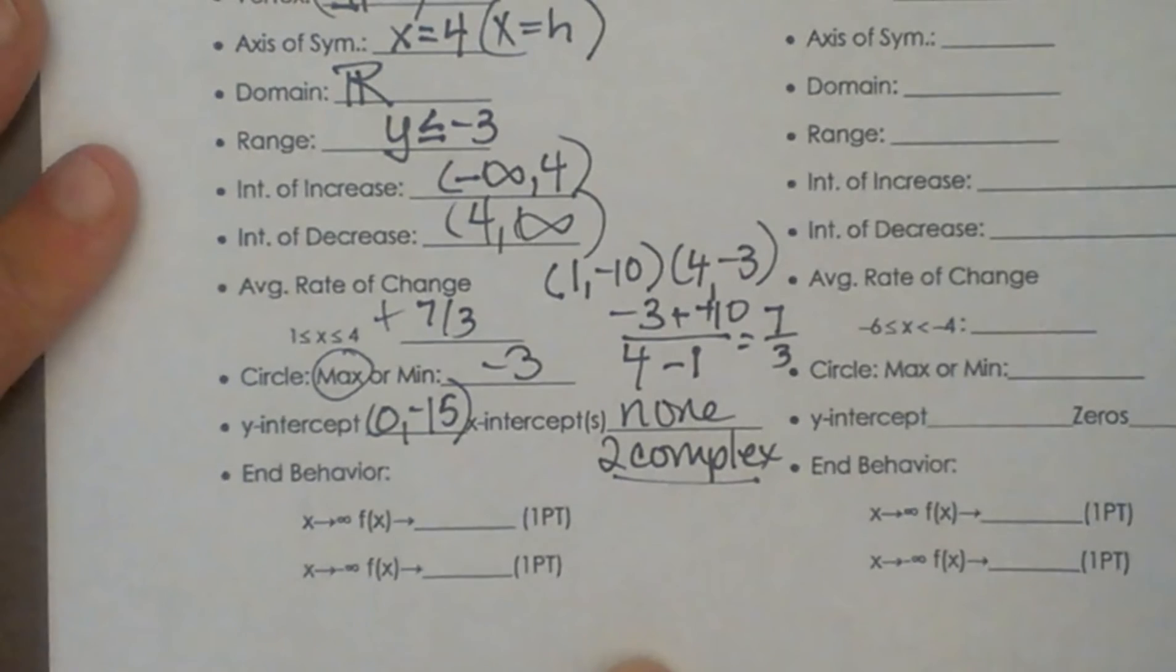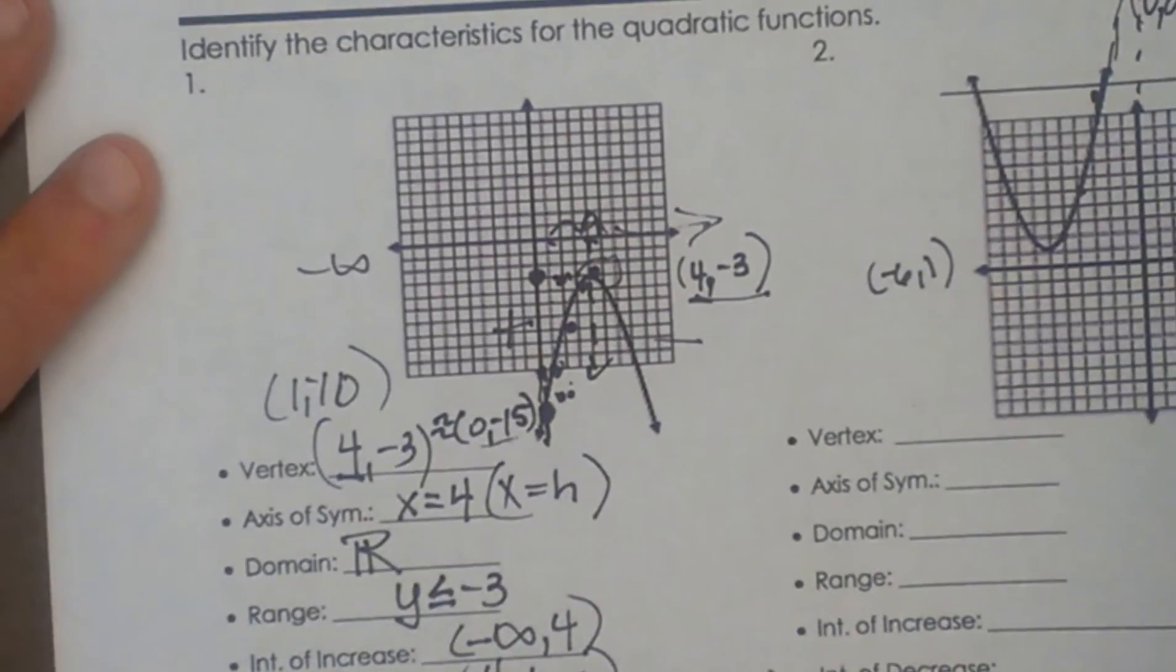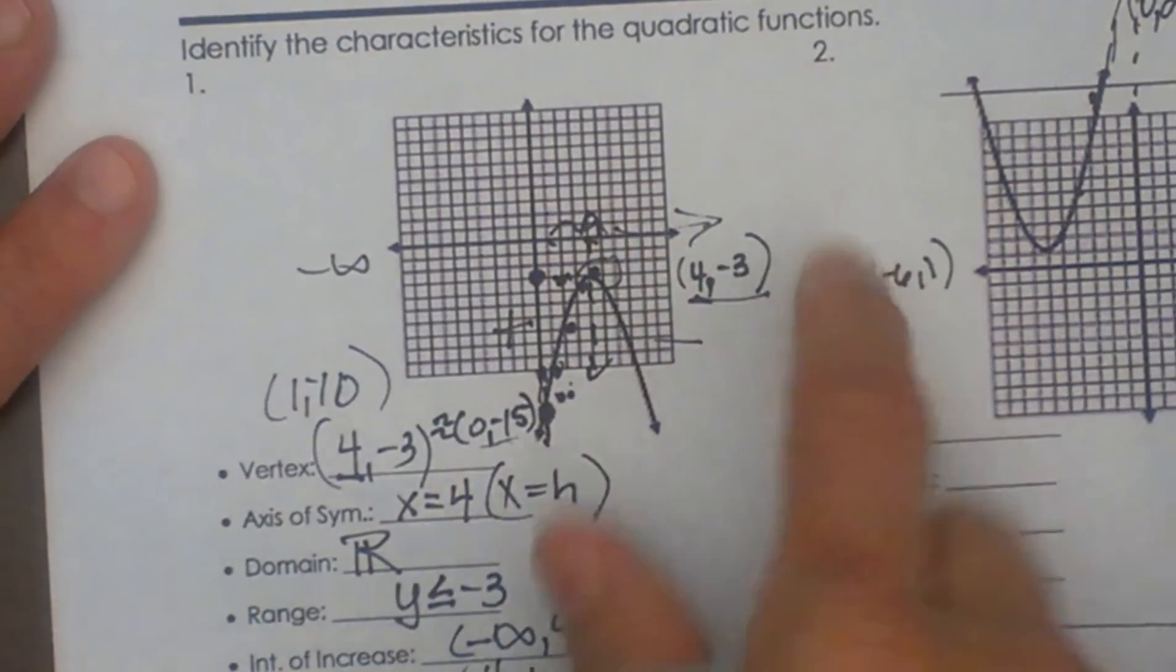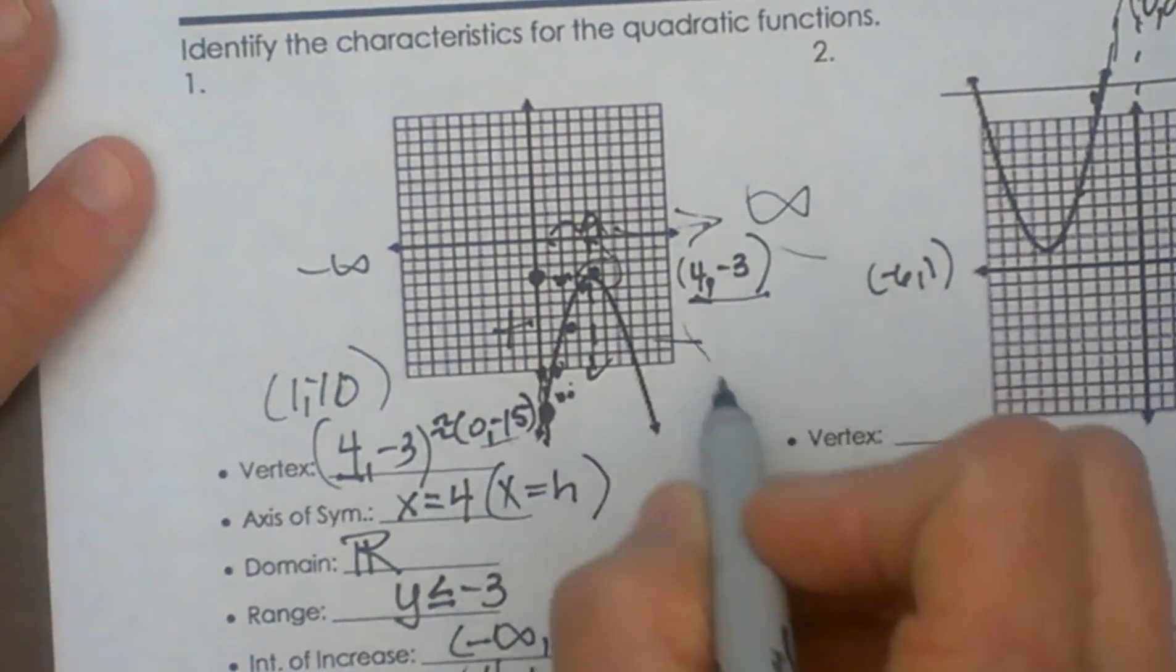Ok and then the final characteristic is end behavior. We read it like this. We say as x goes to the right or as x goes to positive infinity what does the function do? What does the output do? Well let's look. Ok as x gets bigger which is to positive infinity. As x is going this way what is the graph doing?